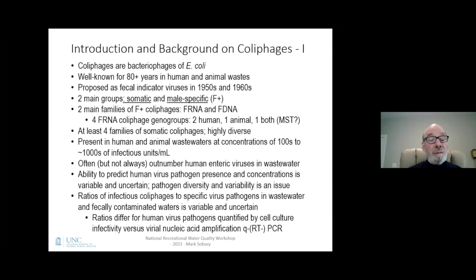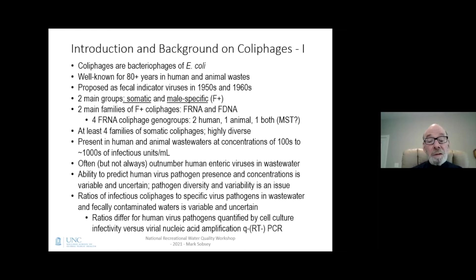We know that these coliphages are present in human and animal wastewaters at concentrations of hundreds to perhaps thousands of infectious units per milliliter. Often, but not only, the coliphages outnumber human enteric viruses in wastewater. The ability to predict human virus pathogen presence and concentrations is variable and uncertain, largely due to pathogen diversity and variability. The ratios of infectious coliphages to specific virus pathogens in wastewater and fecally contaminated waters is also variable and uncertain.